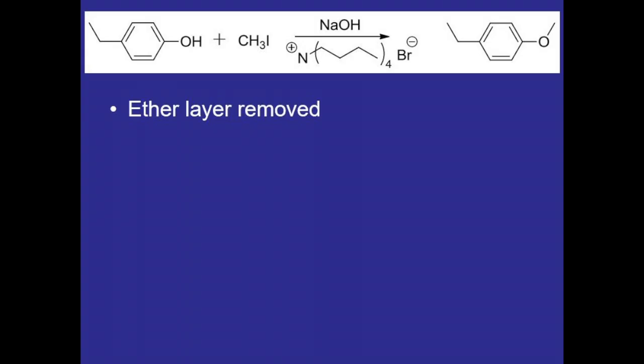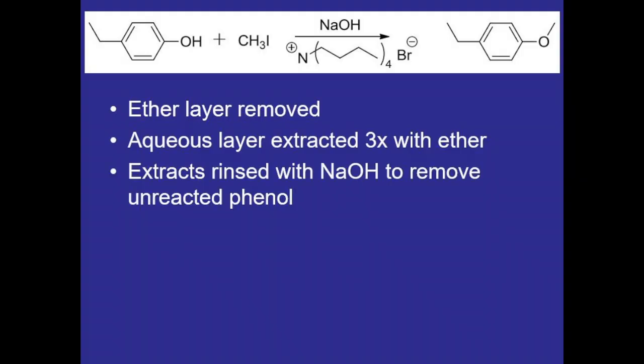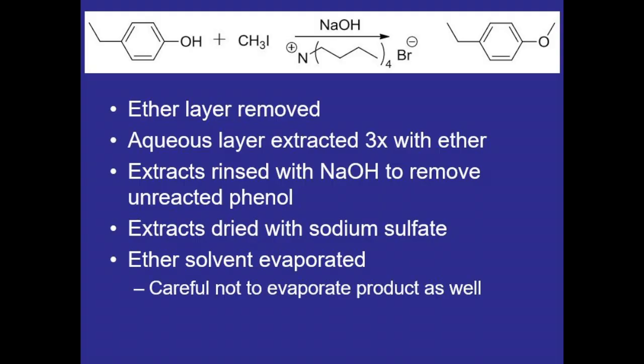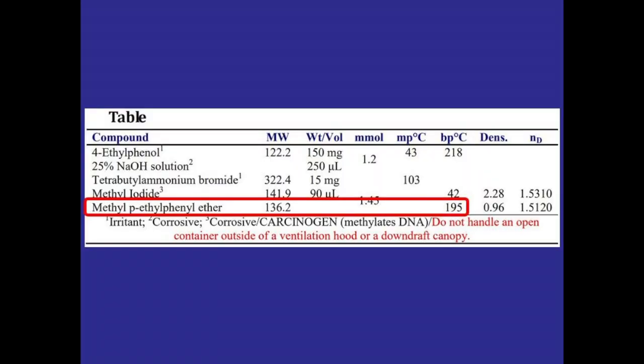Once the reaction is complete, the product ether layer on top can be removed, and the remaining aqueous layer extracted three times with ether. Then the extracts will be rinsed with some sodium hydroxide to help remove any unreacted phenol that might have been left over from the reaction. Those extracts will be dried with sodium sulfate, and then the ether solvent evaporated. Here we'll be careful not to evaporate the product as well, which shouldn't be an issue because its boiling point is 195 degrees Celsius, but often times students get used to having solid products and evaporate all of the liquid off, but we don't want to do that this time because our product is going to be liquid as well.